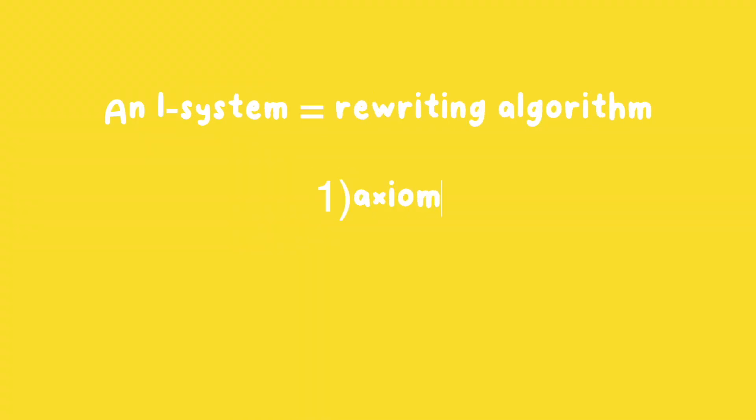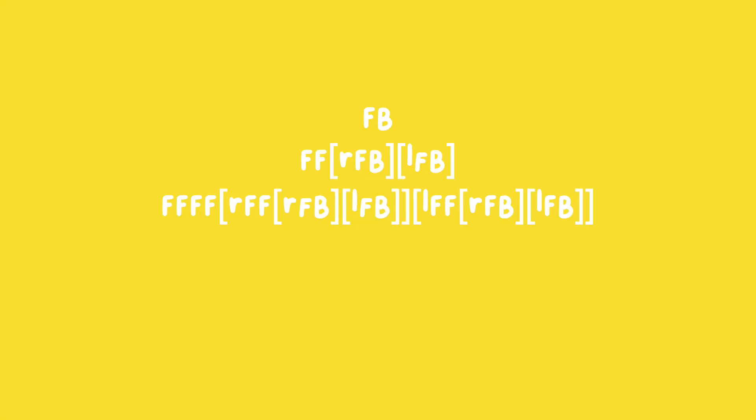An L-system is a rewriting algorithm. You start with a string called an axiom and a set of rules for replacing a character with a different character or a set of characters, and the rewriting is done for a set number of iterations. Our set of symbols is called an alphabet.